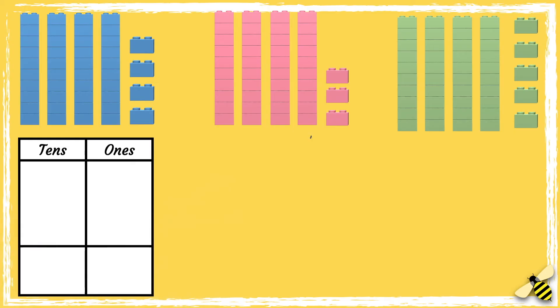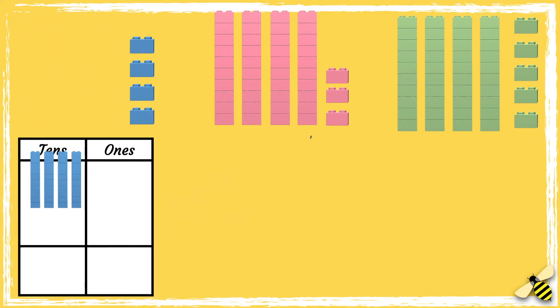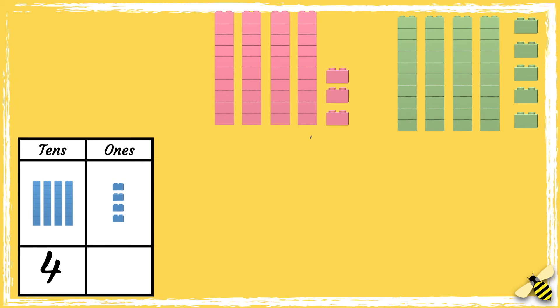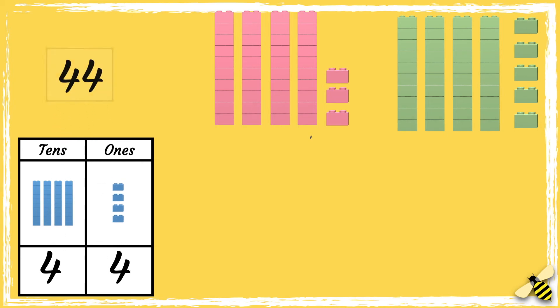Let's start with the blue bricks. There are four tens and there are four ones, so there are 44 blue bricks.